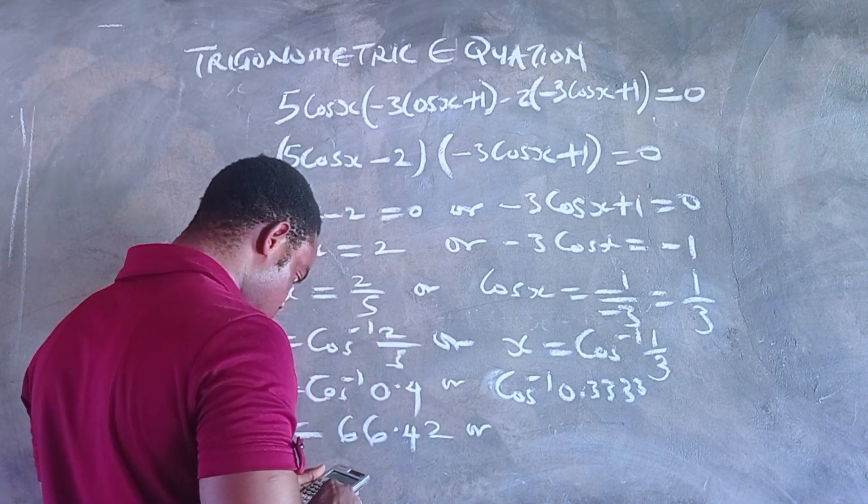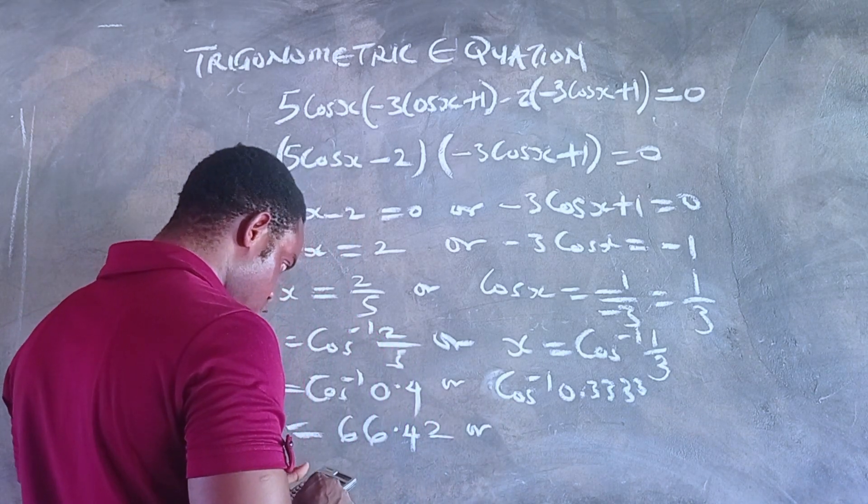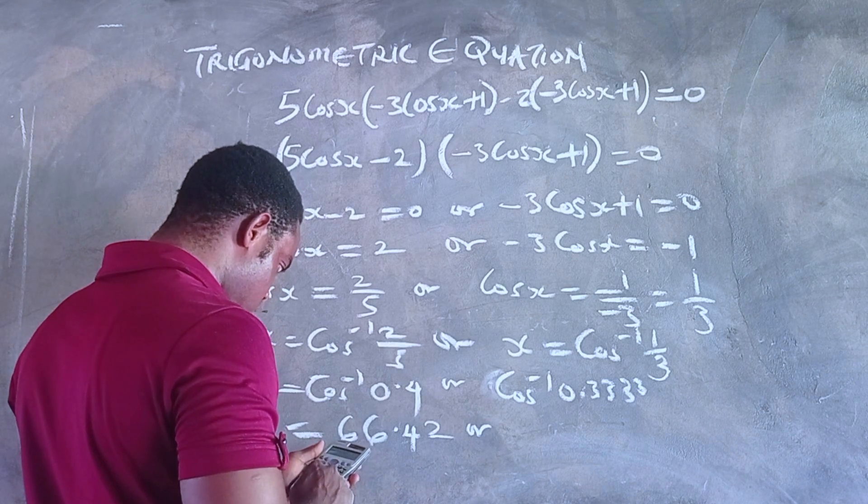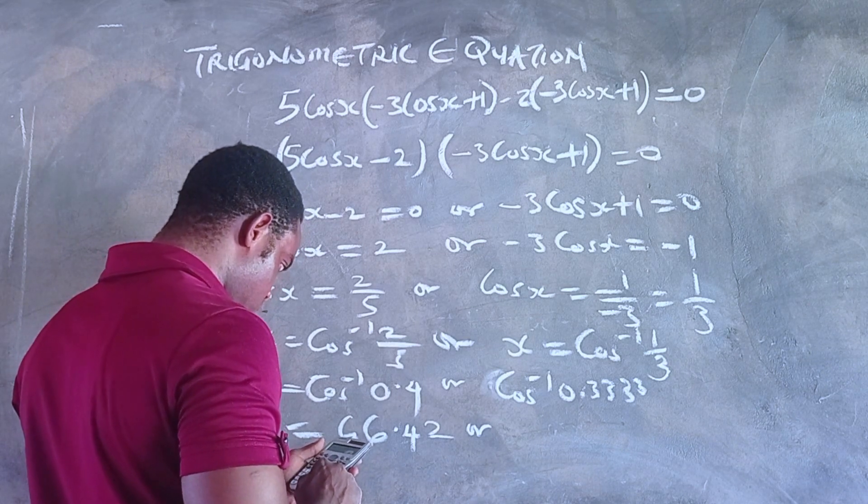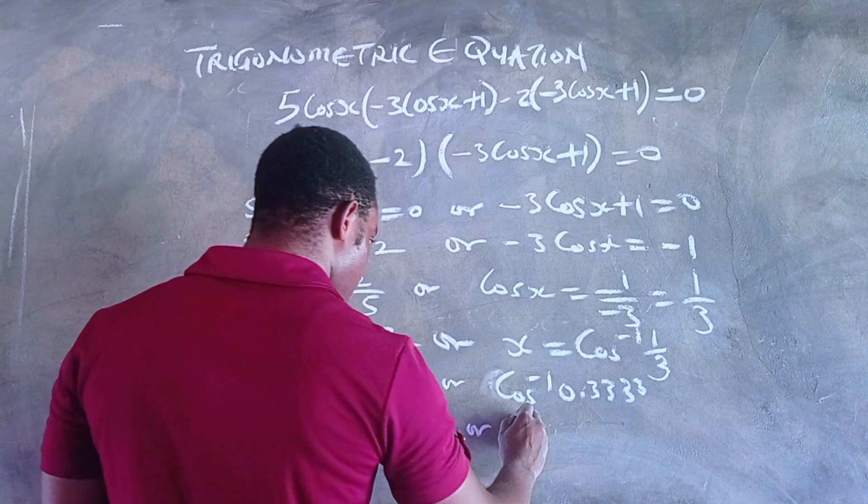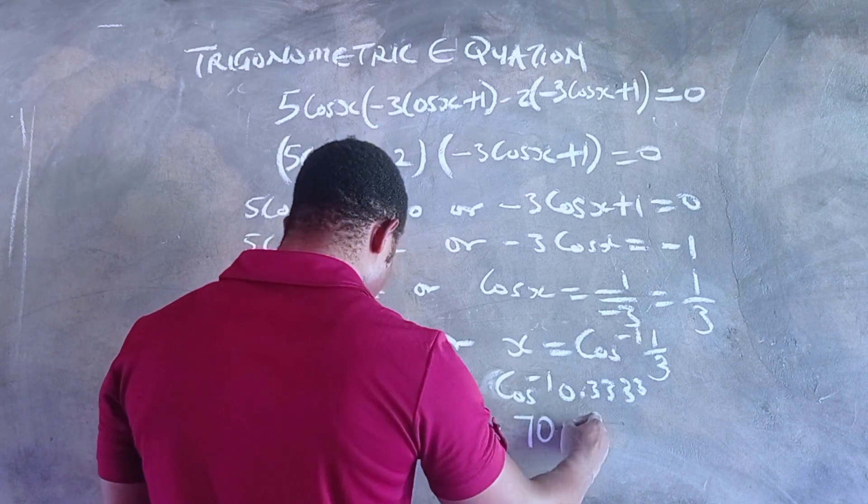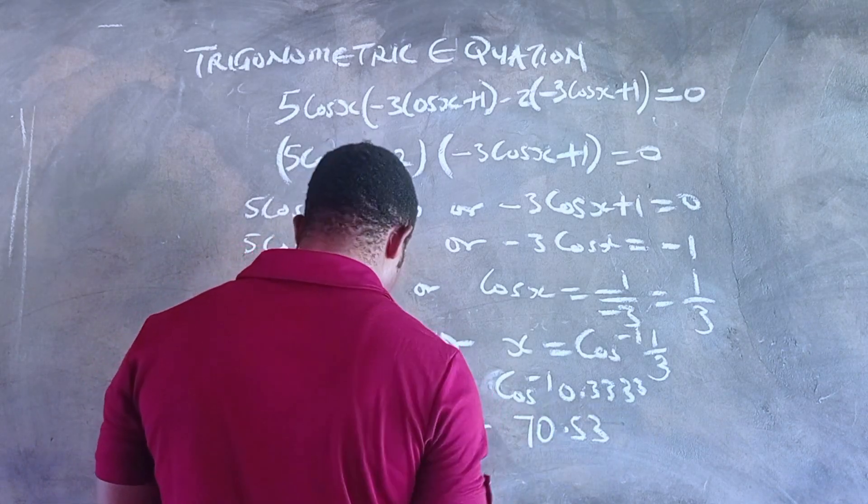Pressing cos⁻¹(0.3333) with the calculator gives 70.53 degrees.